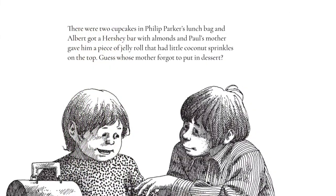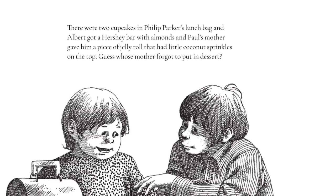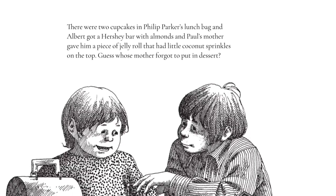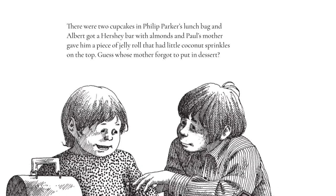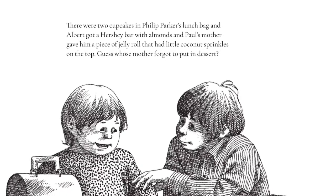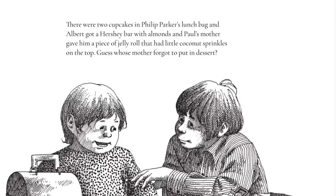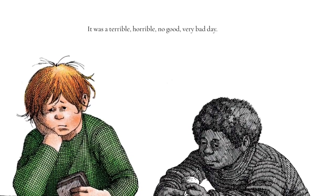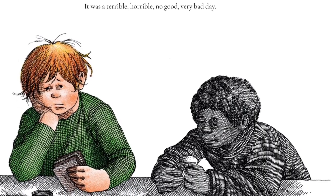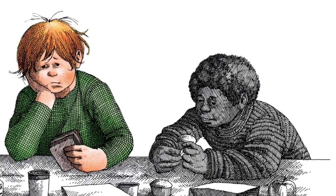There were two cupcakes in Philip Parker's lunch bag and Albert got a Hershey bar with almonds and Paul's mother gave him a piece of jelly roll that had little coconut sprinkles on the top. Guess whose mother forgot to put in dessert? It was a terrible, horrible, no good, very bad day.